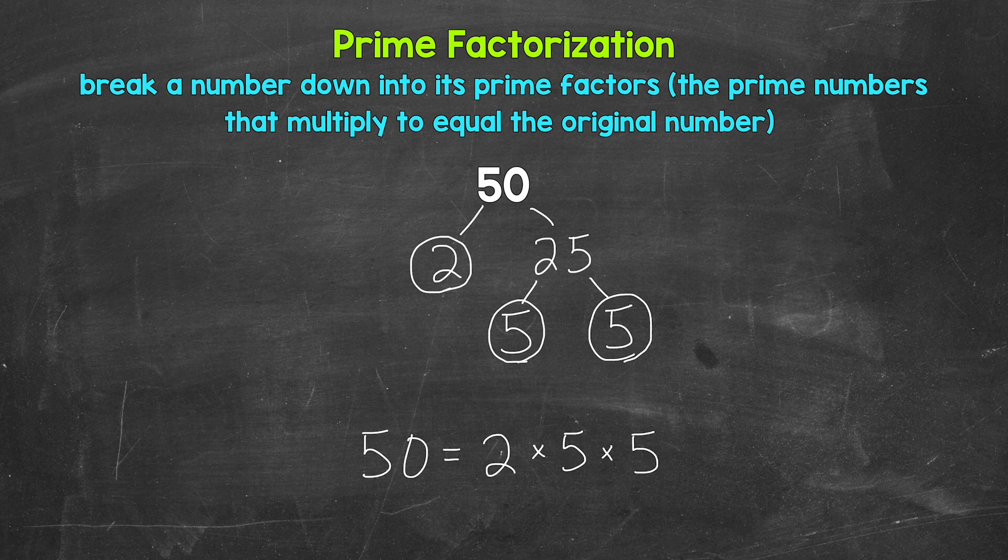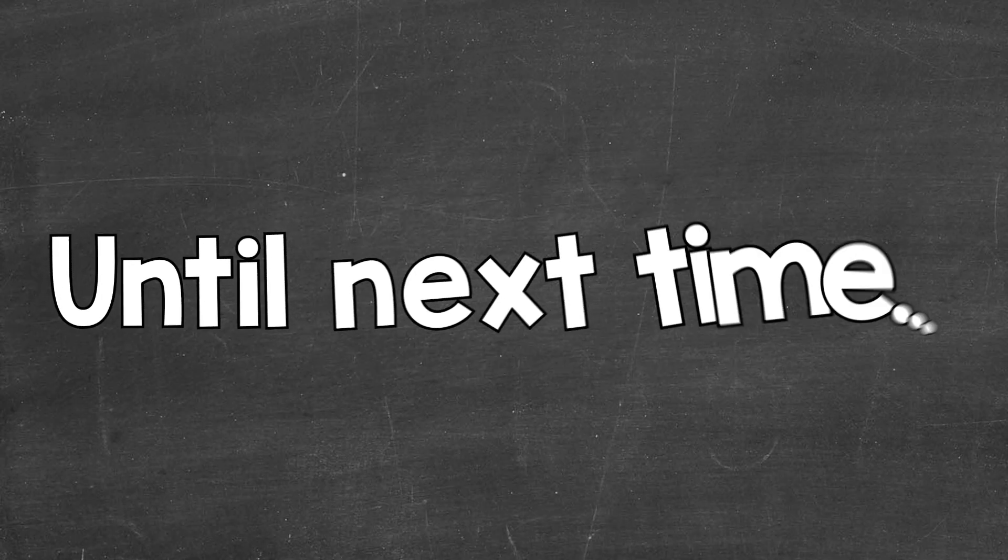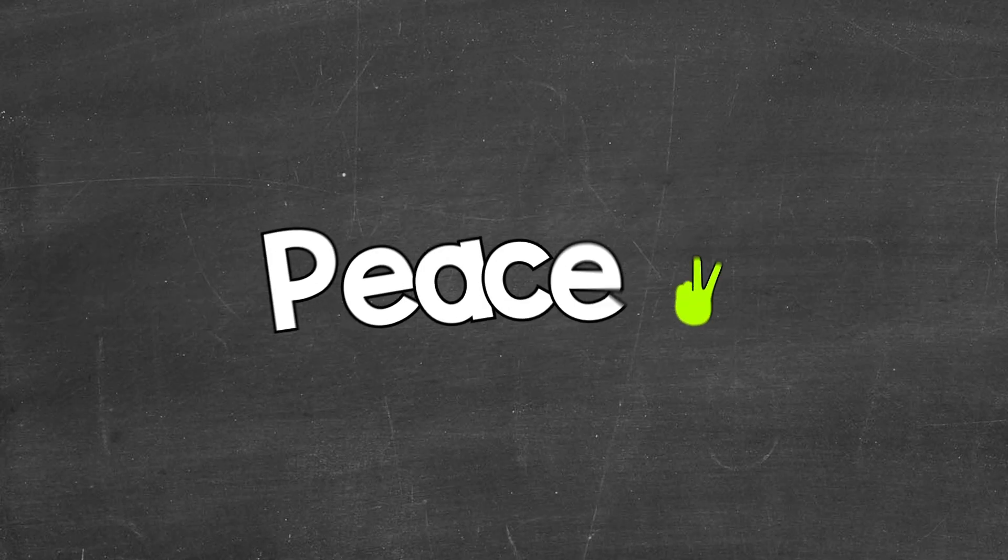If we have the correct prime numbers here, they will multiply to equal our original number. So let's check here. 2 times 5 is 10 times 5 is 50. So we are correct here. So there you have it. There's the prime factorization of 50. I hope that helped. Thanks so much for watching. Until next time.